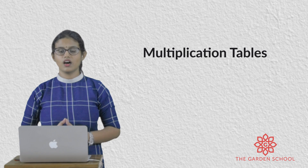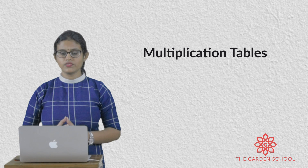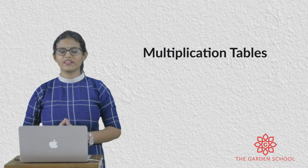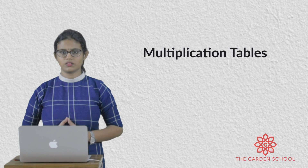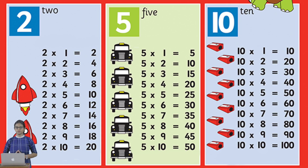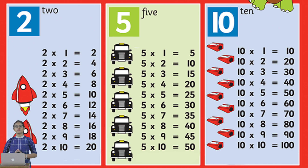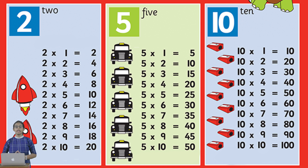Next, you have learned about multiplication tables. We have learned the table of 2, table of 5, and table of 10. Now we are going to revise the tables together. Table of 2: 2×1=2, 2×2=4, 2×3=6, 2×4=8, 2×5=10, 2×6=12, 2×7=14, 2×8=16, 2×9=18, 2×10=20.